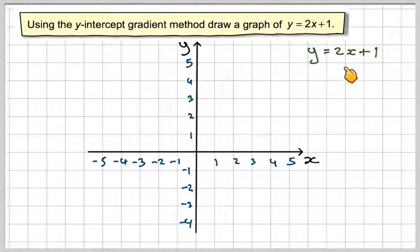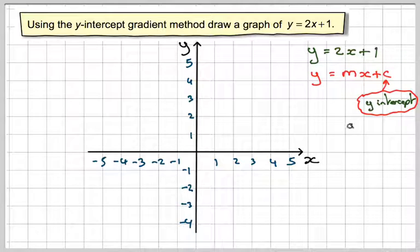We've got y equals 2x plus 1. Underneath that, if we write y equals mx plus c, now the c stands for the y-intercept, and the m stands for the gradient, that's the measurement of slope.